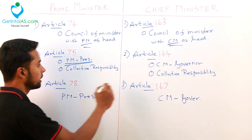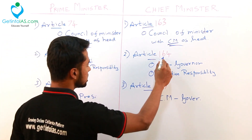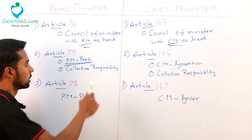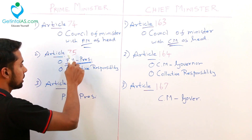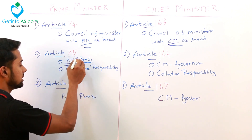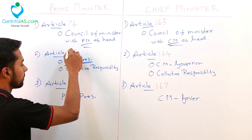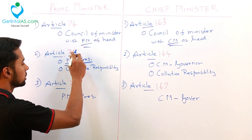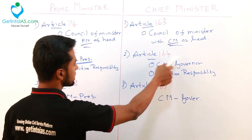The respective article for the union is 75, and for the state it is 164. Using the same memory trick: take 75, subtract 1 from each digit — 7 minus 1 is 6, 5 minus 1 is 4 — so it is 164.